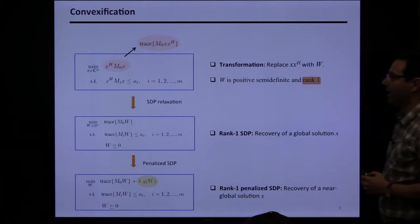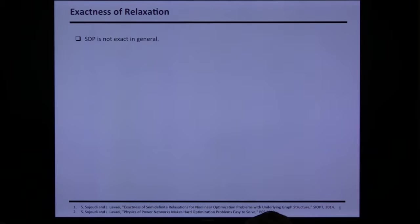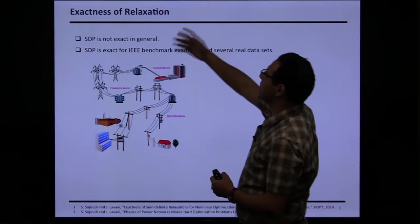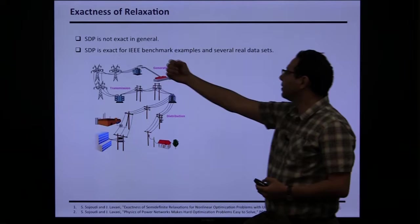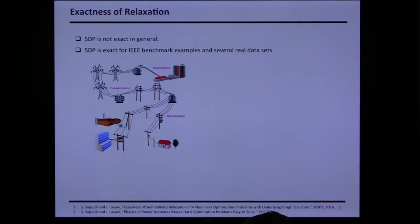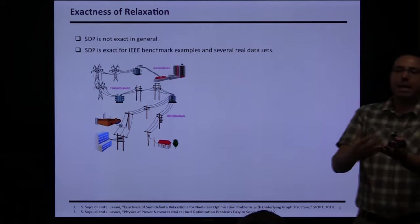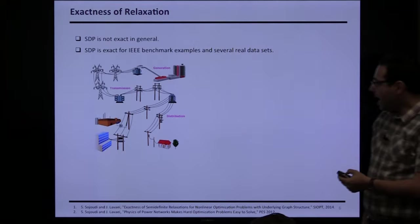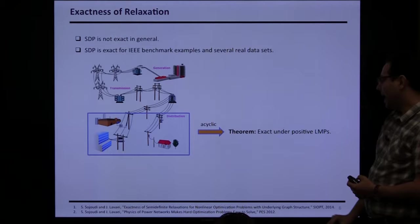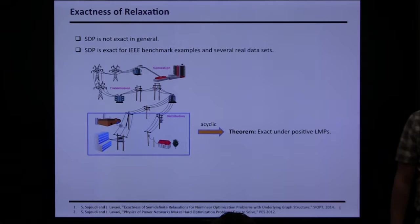We tried this on power systems and realized that SDP is exact for IEEE benchmark examples and several real datasets. This was fascinating because the optimal power flow problem was introduced in 1962 with many research papers, yet this was the first idea proposed for finding a global solution. ISOs may be solving it and getting global solutions without knowing it — this SDP gives us a certificate of global optimality.